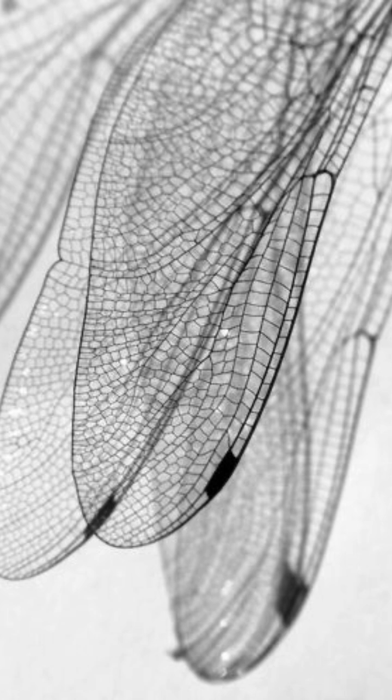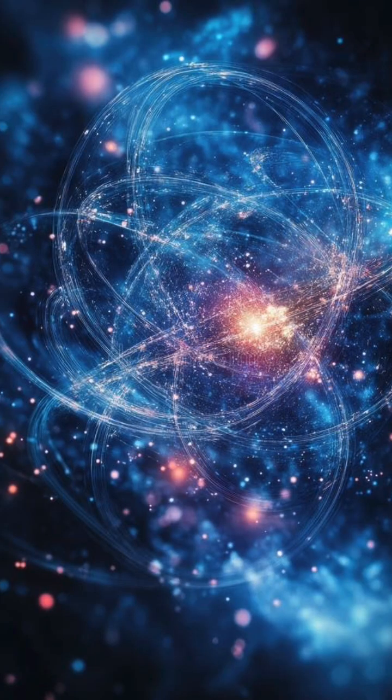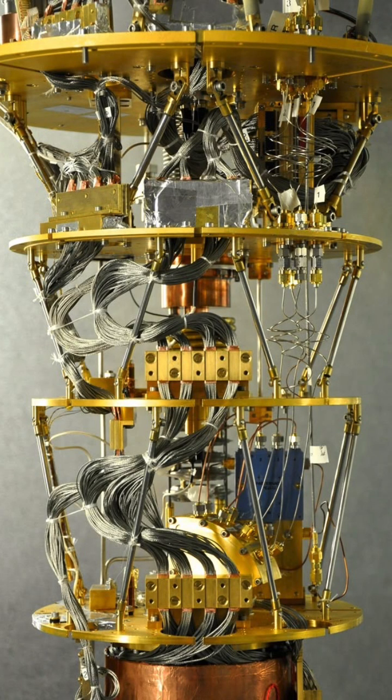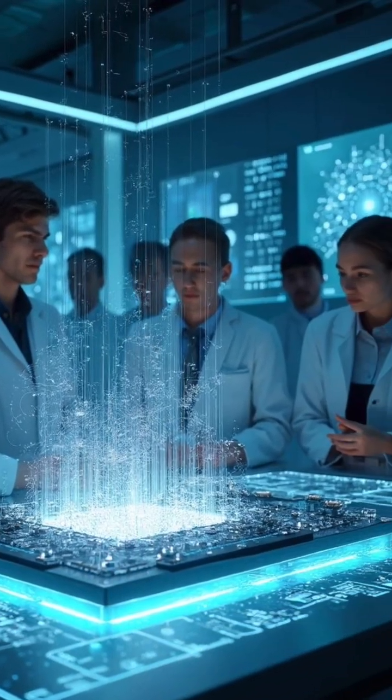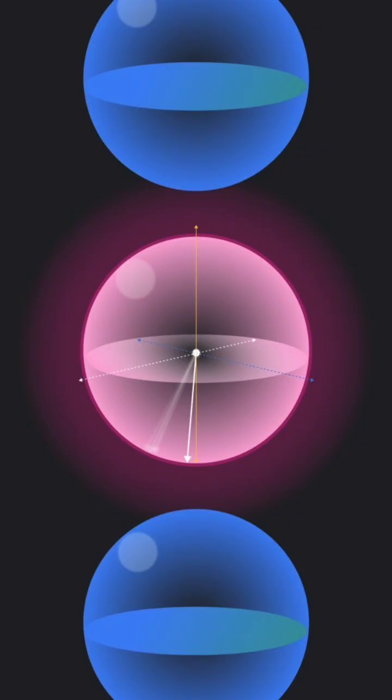1. Fragile but powerful. These quantum states are super fragile. A tiny disturbance can collapse them. That's why building stable quantum computers is one of science's biggest challenges. Quantum computing doesn't just use particles, it depends on their weirdest behaviors.